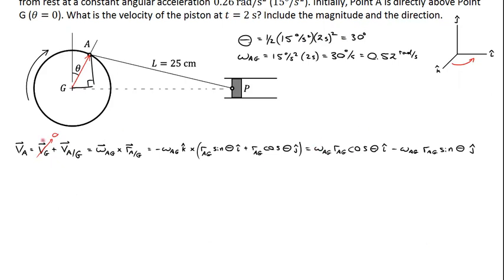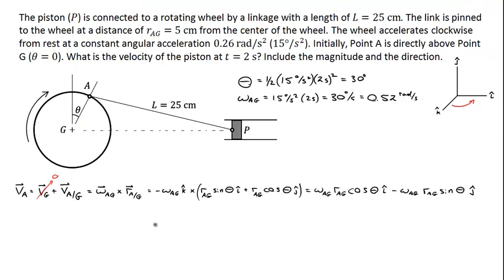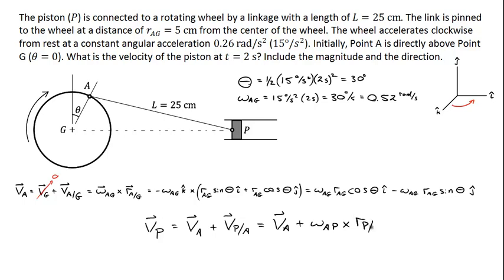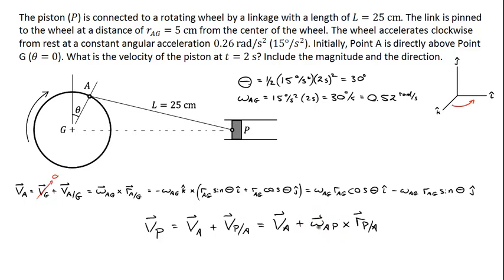Here is the velocity of A as a function of theta and omega AG. Now I can calculate the velocity of P, which equals the velocity of A plus the velocity of P with respect to A, using the relative velocity equation again. This can be written as VA plus omega AP crossed with the position of P with respect to A. We don't know omega AP yet, but it would be counterclockwise. We also need to find the position of P with respect to A.